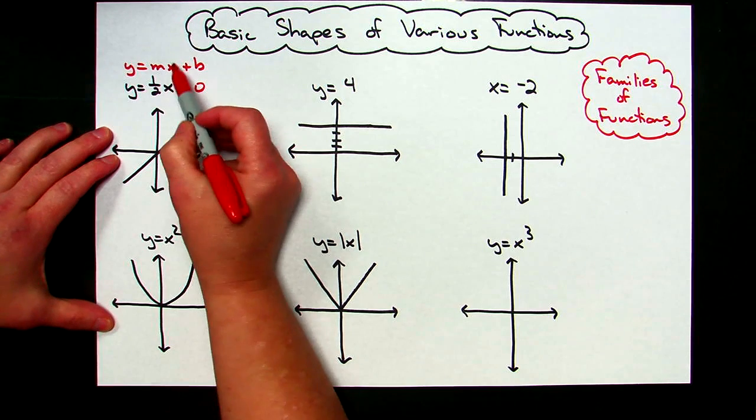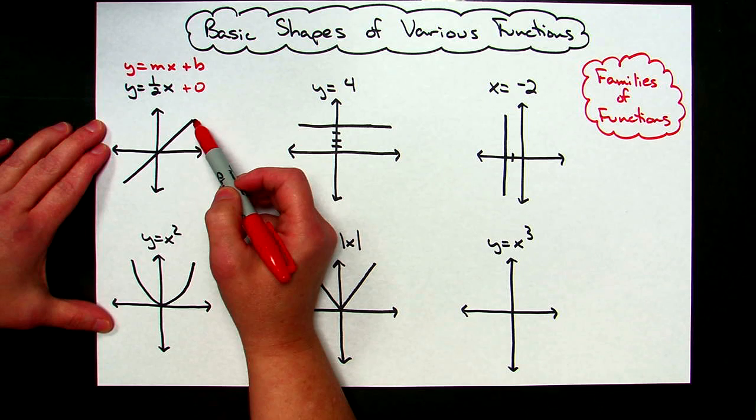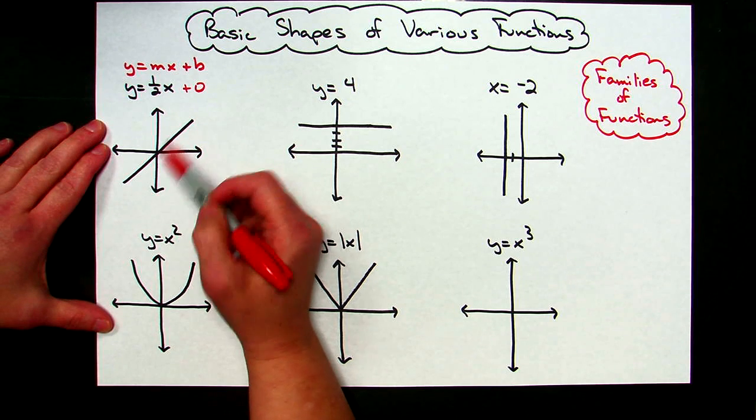A single x with nothing going on to it, something in that form, is just going to be a straight line that's going to have a slope either positive or negative.